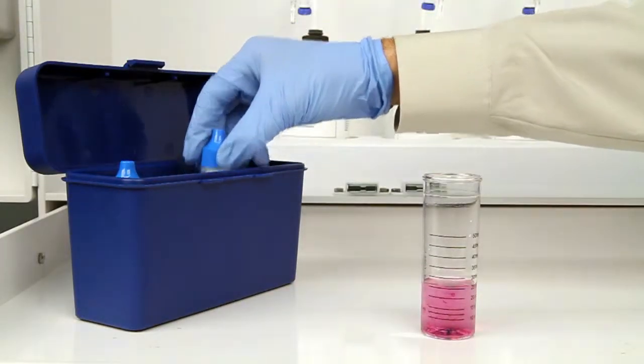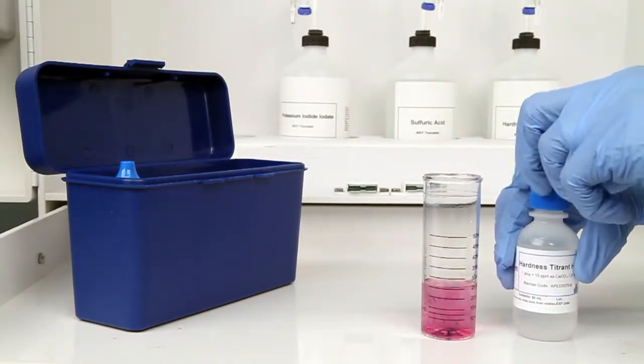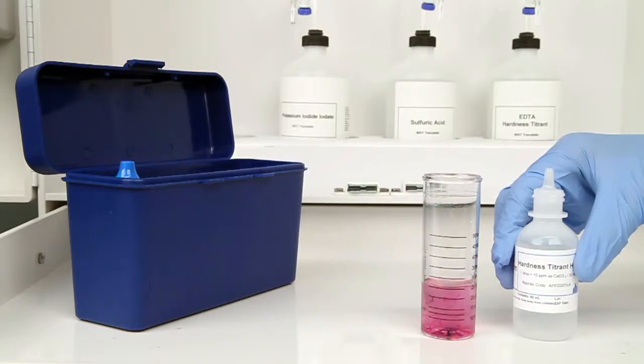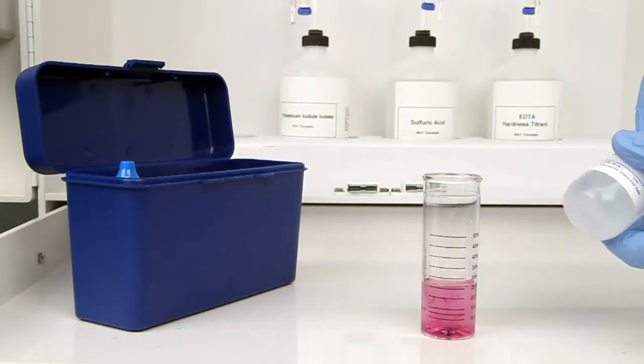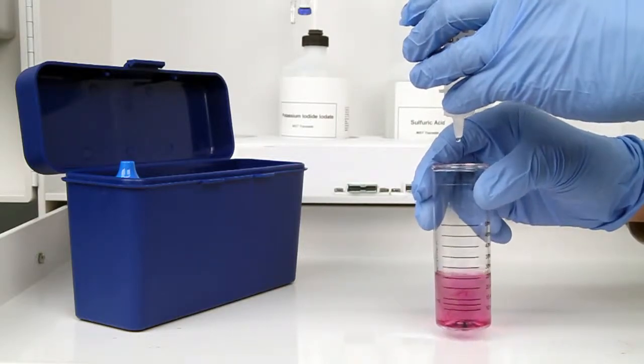The next step according to the Endpoint ID procedure is to perform the titration. Each bottle of titrant is labeled with the equivalency and sample size it was manufactured for. It's important to make sure you have the proper titrant and the proper sample size for this titration.